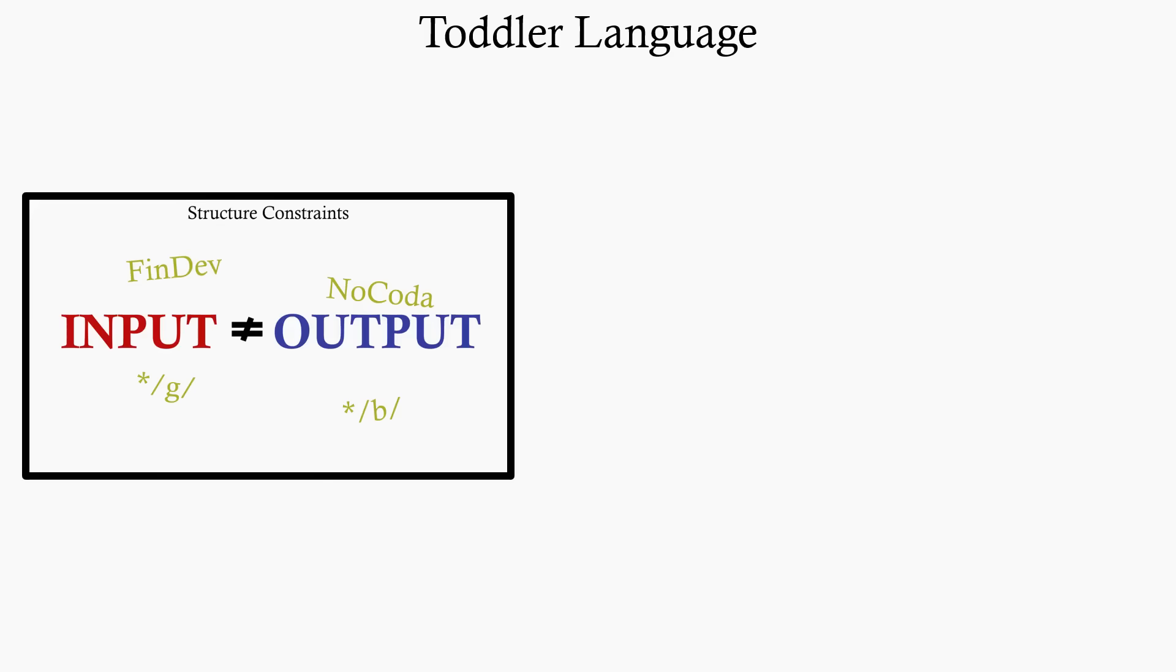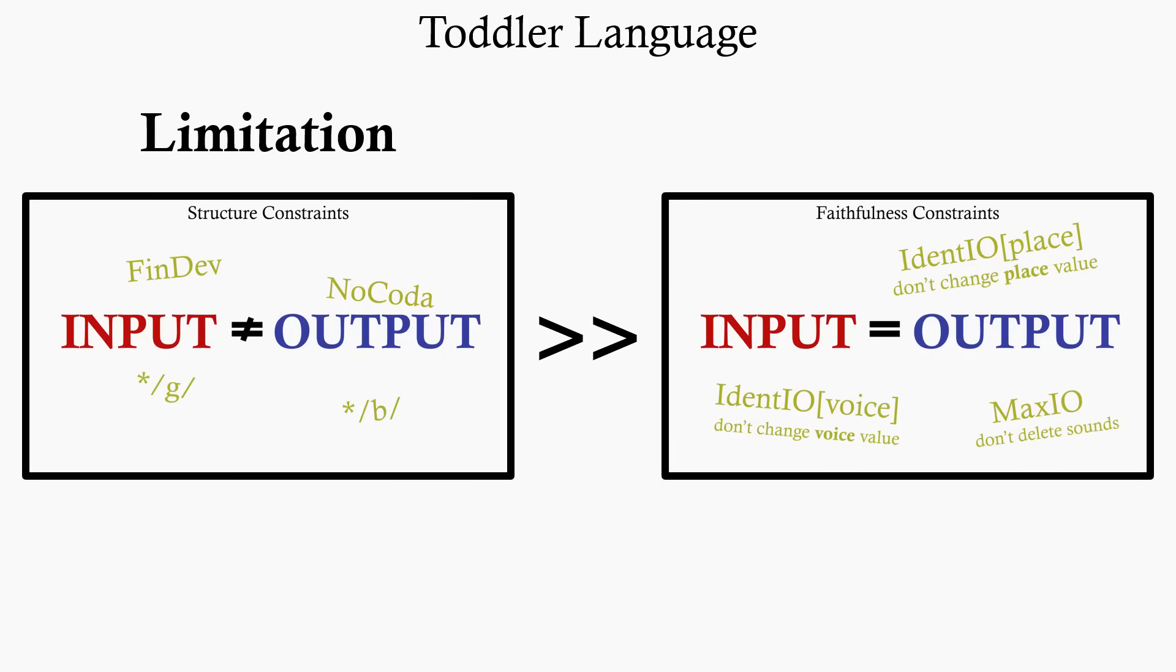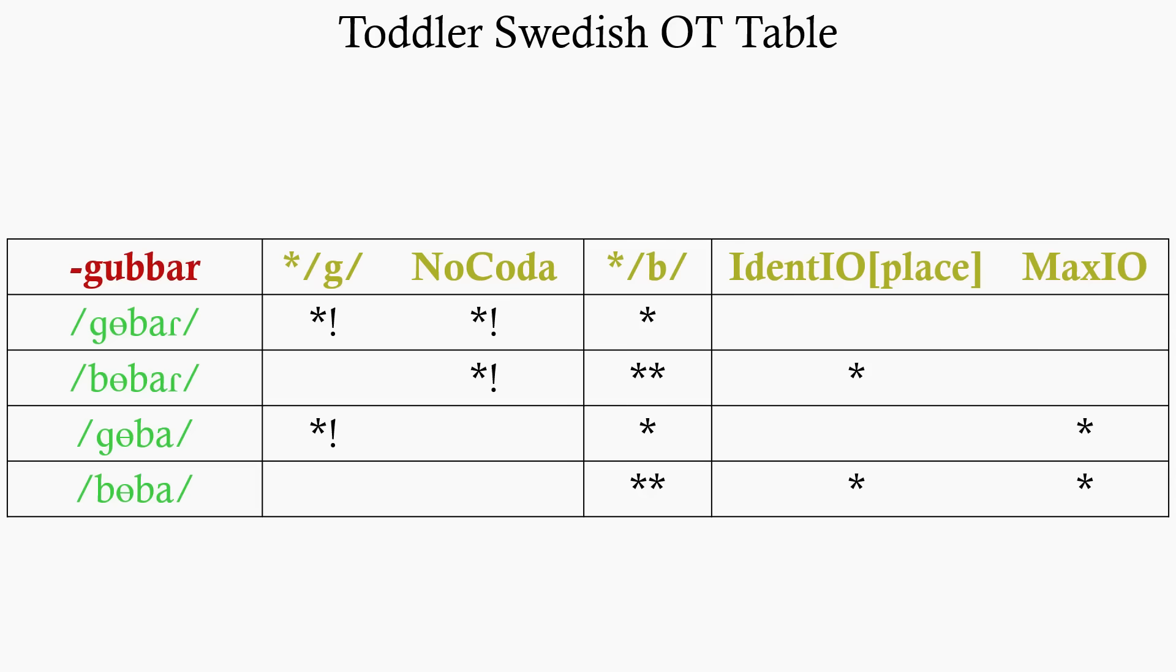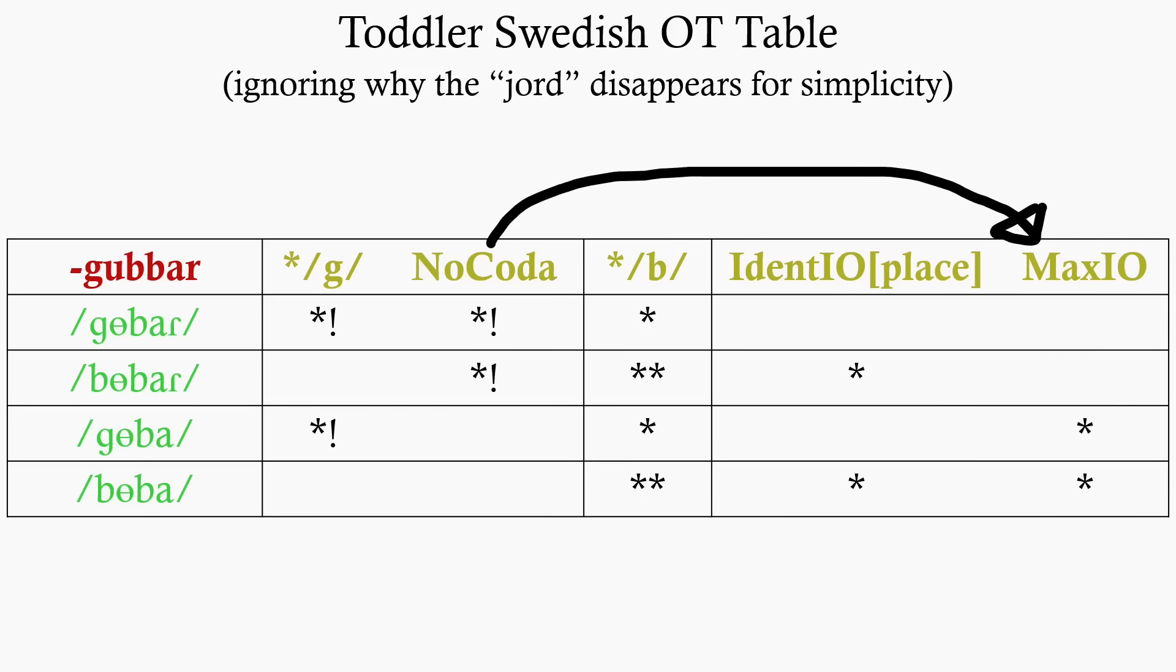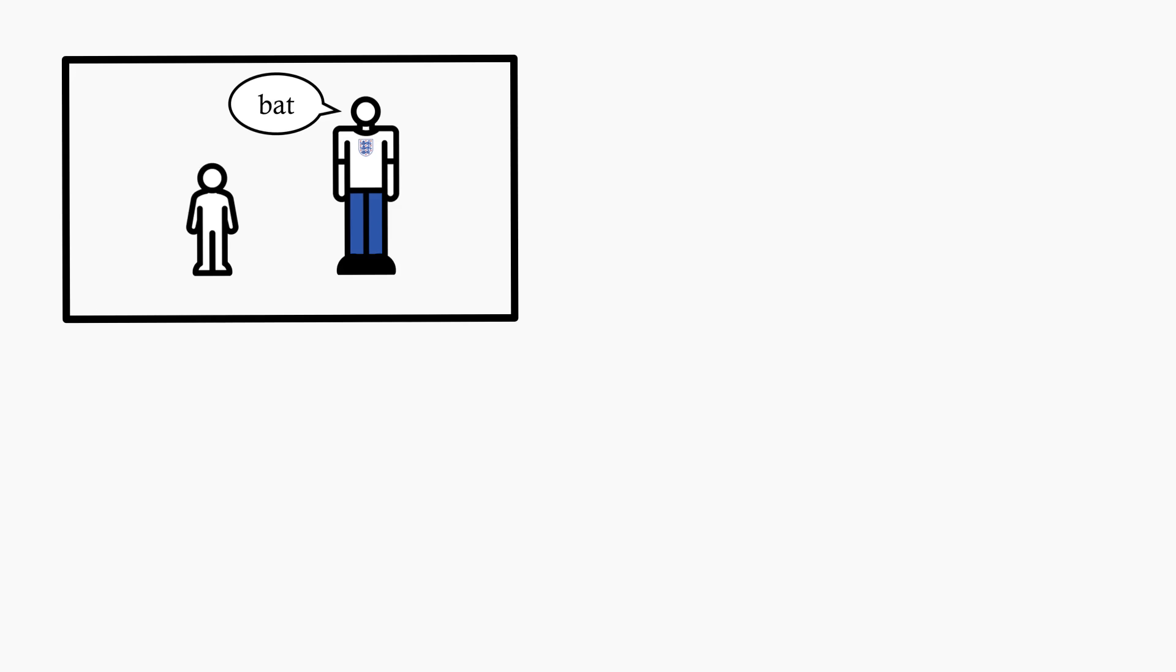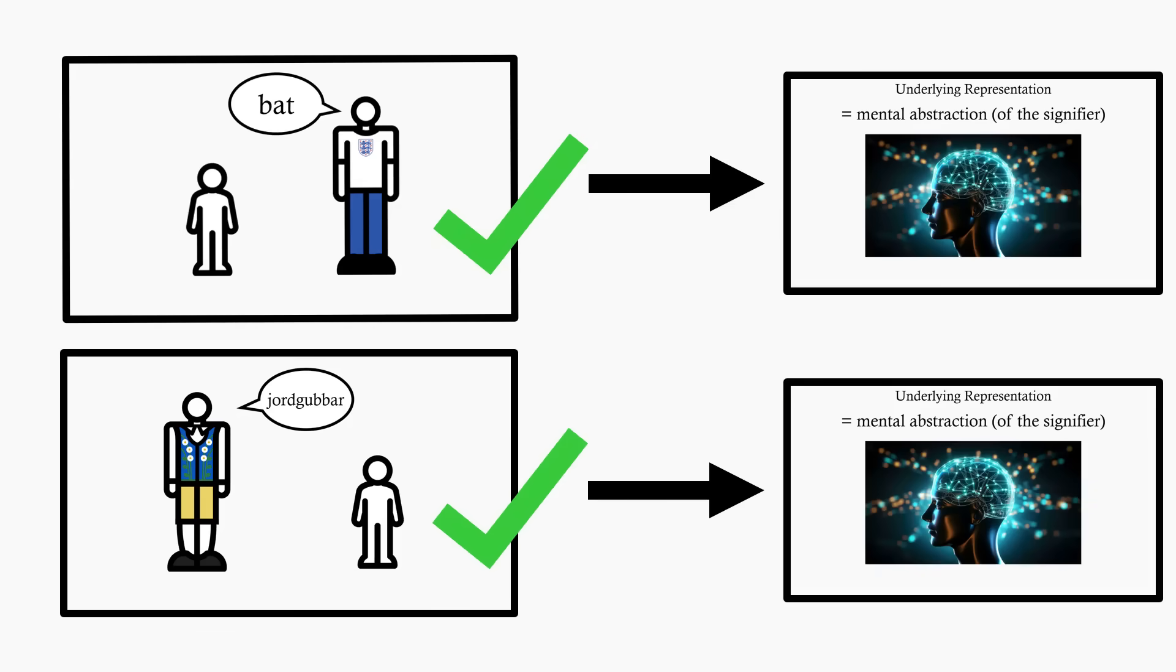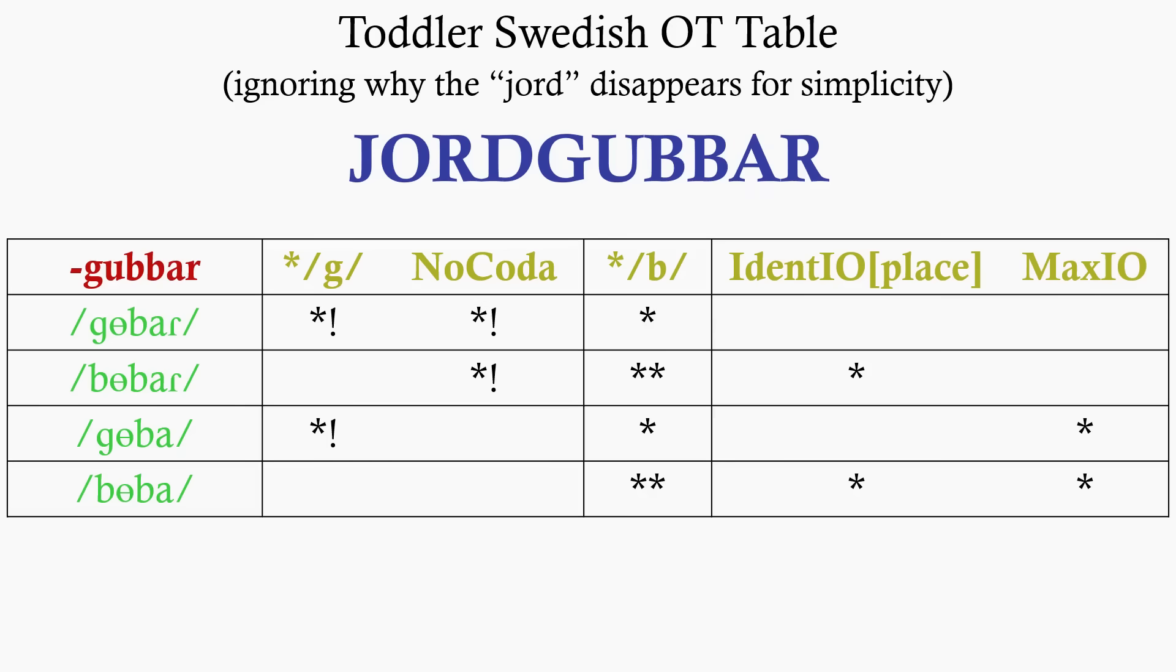But in a toddler language, structure constraints outrank faithfulness constraints. The limitations on speech are much more important than replicating the input in the output. So yes, out come words like T and bubba. You can model the OT tables like this in a kind of simplified way, with no coda outranking maxio, and the place constraints outranking identio place. But when an English acquiring toddler hears the word bat, or a Swedish acquiring one hears the word jordgubbar, well, they are still able to tell which word is meant, suggesting that they have stored the word in its entirety in their brains. These adult words break all the structure constraints anyway, so on the perceptive level, the structure constraints are irrelevant, and they know which UR the adult is getting at because of the faithfulness constraints. Thus, the discrepancy between word perception and production of toddlers.